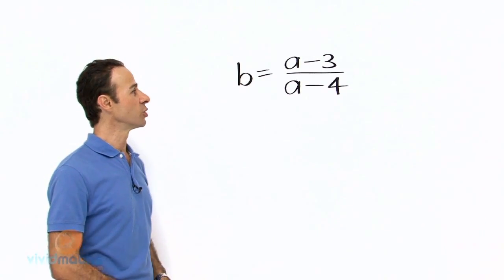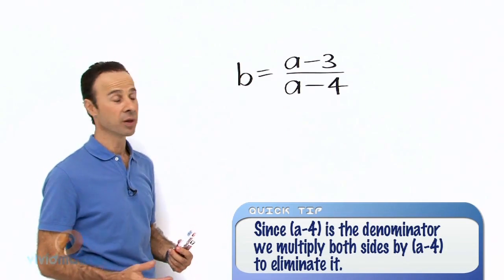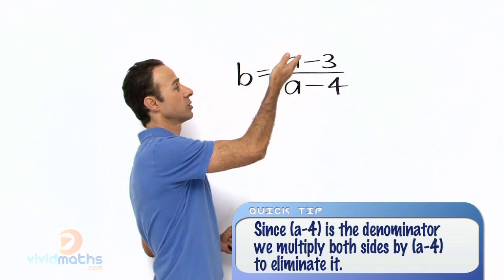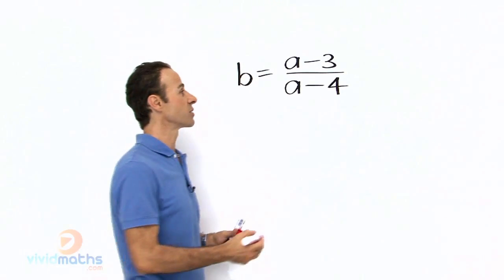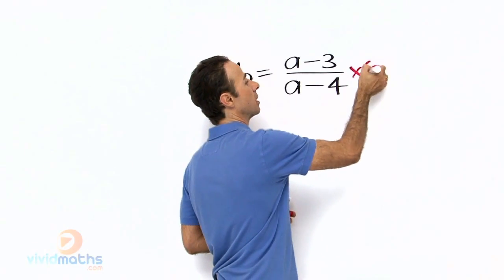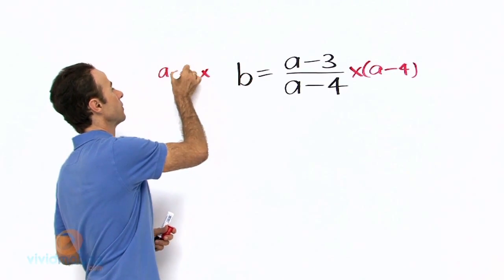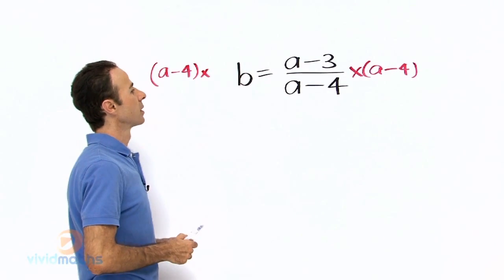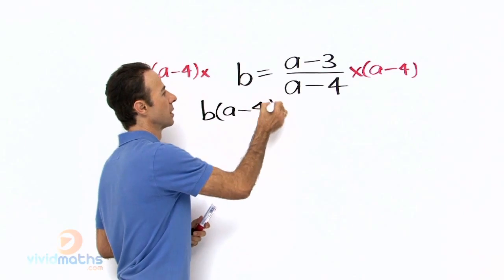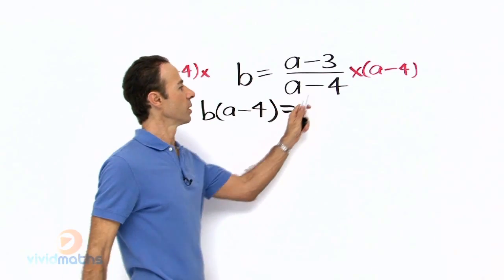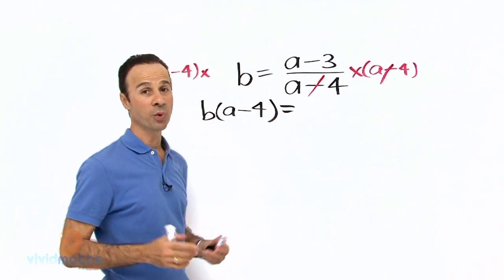So the first thing we need to do is multiply both sides by A minus 4, or if you want to think of it as cross multiplying, that corner times that corner, it is still the same process. So let us multiply both sides by A minus 4. That will yield here B outside of A minus 4 equals, and if we cancel these two, A minus 4, we are simply left with A minus 3.